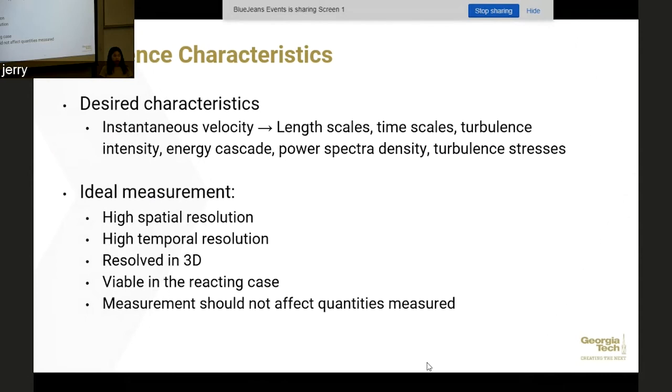So our ideal measurement, if we were living in a perfect world, we'd have very high spatial resolution as well as high temporal resolution. We would also have the measurement completely resolved in 3D. So at each point we would know exactly where the velocity vector would be pointing. In our case we would also like for this to be viable in the reacting case, meaning we want to be able to measure the flow when it's just the fuel and air mixture as well as when it's actually lit. Lastly, the measurement would ideally not affect the quantities measured, meaning that the measurement wouldn't perturb the flow downstream. We don't live in a perfect world so we have to make trade-offs between these different metrics.